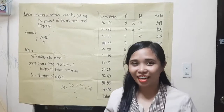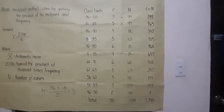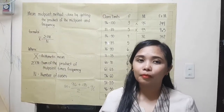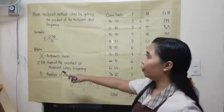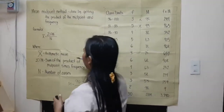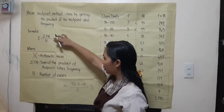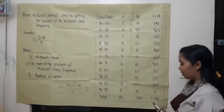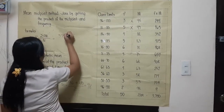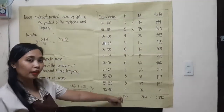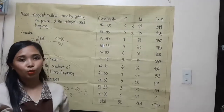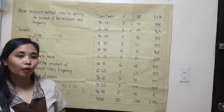Welcome back! Let's check your answers. For the last step, let's substitute our data into our formula to get the mean of this group data. Our summation of the product of midpoint times frequency is 3,740. When we divide it, it is equal to 74.8.